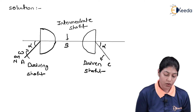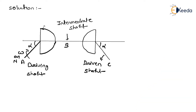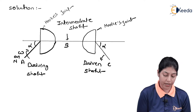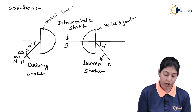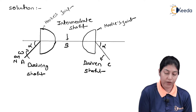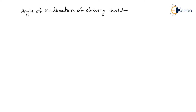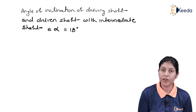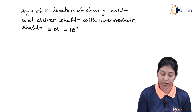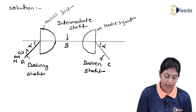Here we are considering one universal joint configuration where two Hooke's joints are connected with one driving shaft, one driven shaft, and one intermediate shaft. Alpha is considered as the angle of inclination of the driving shaft and driven shaft with the intermediate shaft, which is 18 degrees.